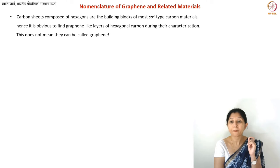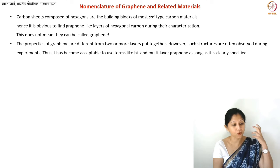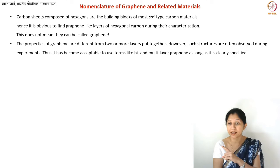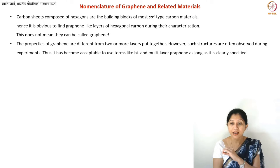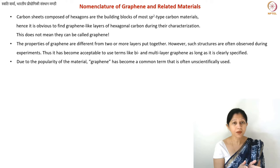The term graphene should only be used for single and defect-free layers. The nomenclature is important because when we talk about the single layer, we are talking about one very specific set of properties which is not valid for multi-layer or even bilayer graphene. The effect of the pi band is completely different for single layer defect-free graphene — even with two layers you lose that effect.